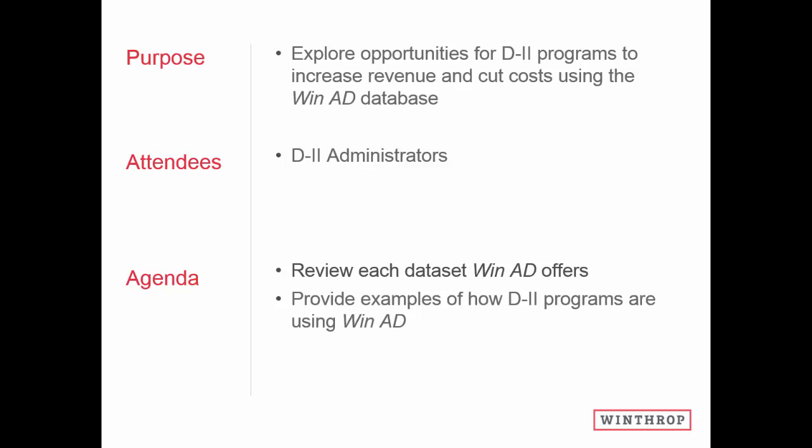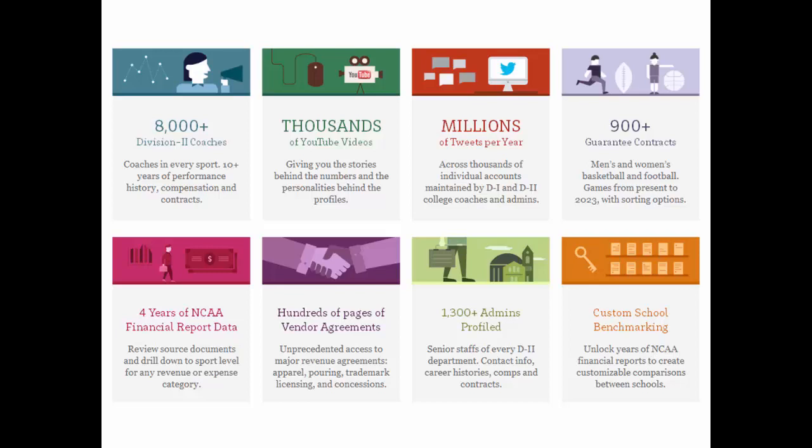Before we get started, here's a quick preview of what you're going to see today. Each tile on the screen represents a data set that WinAD offers. Top left, we've got 8,000 coaches in Division 2 — head and assistants in every men's and women's sport, from football to fencing — plus support staff like trainers, strength and conditioning, and video coordinators. You've also got YouTube videos, guarantee game contracts, financial report data, vendor contracts, administrator profiles, and custom benchmarking tools.